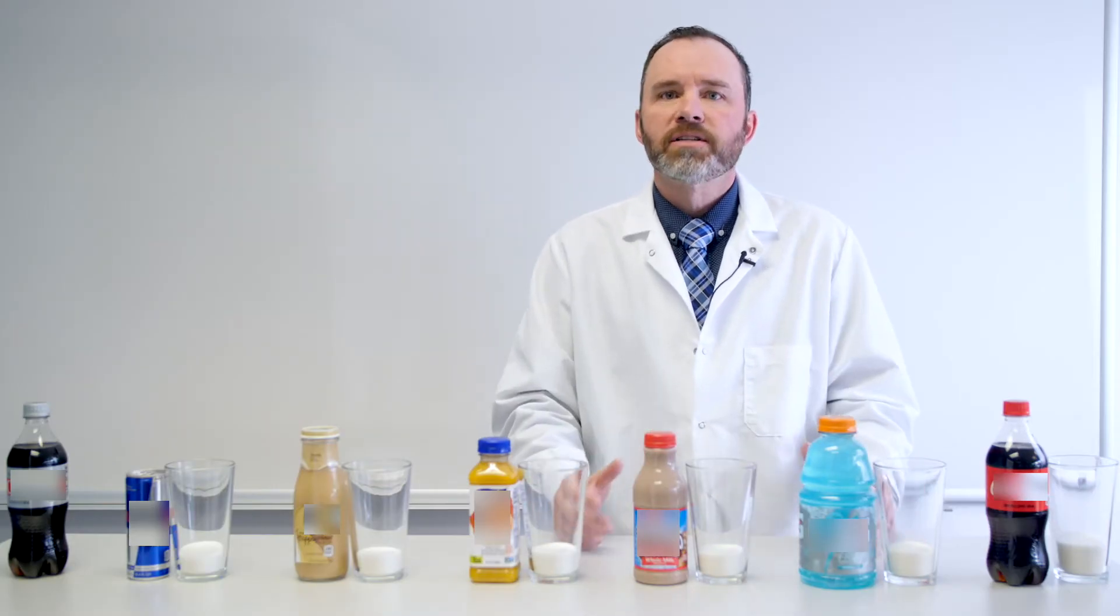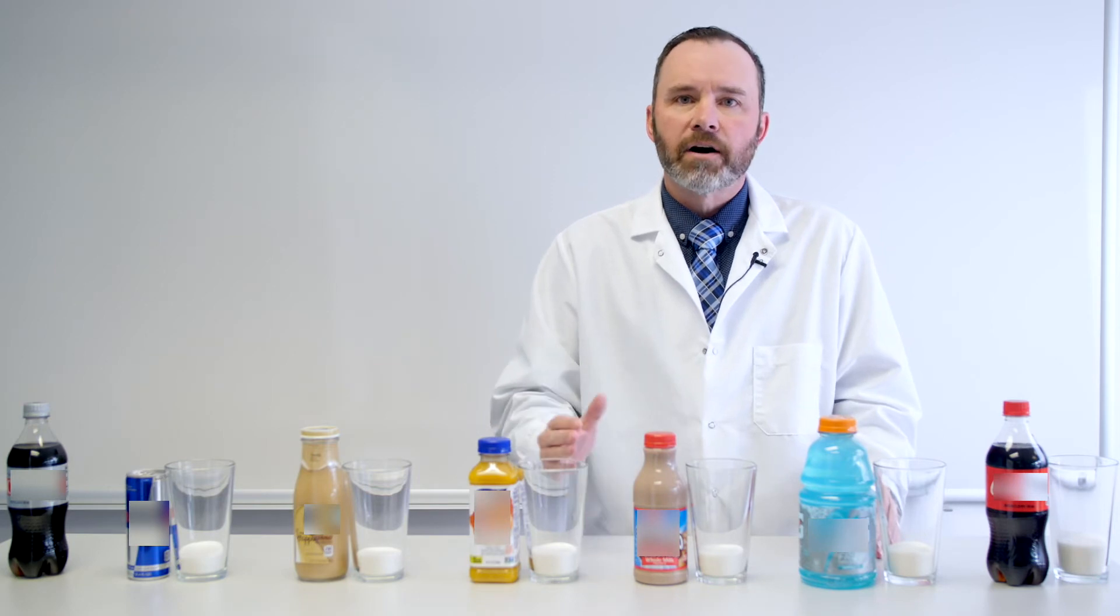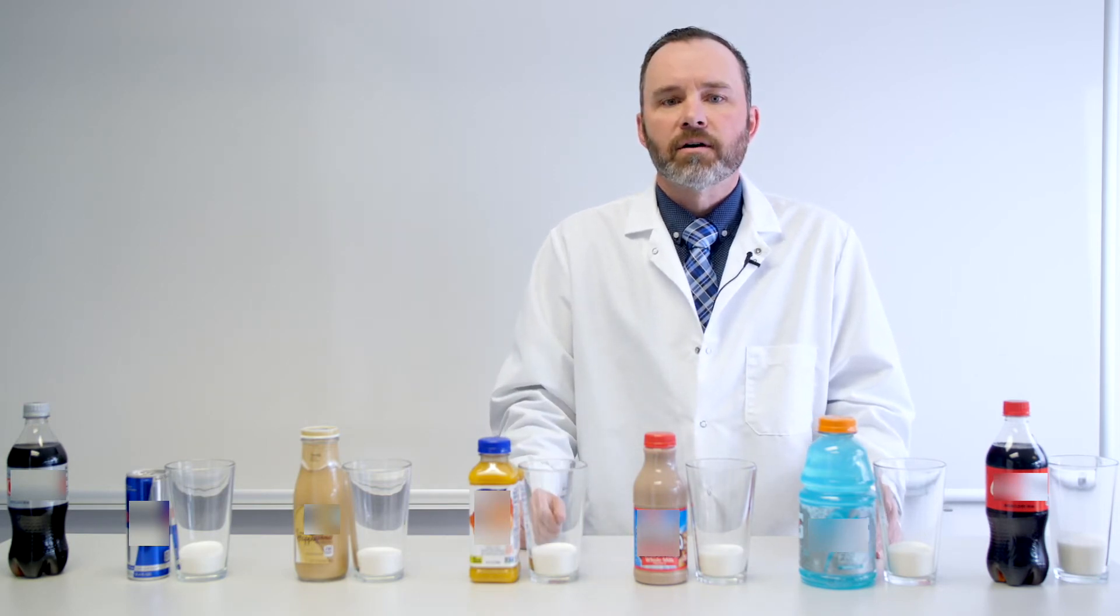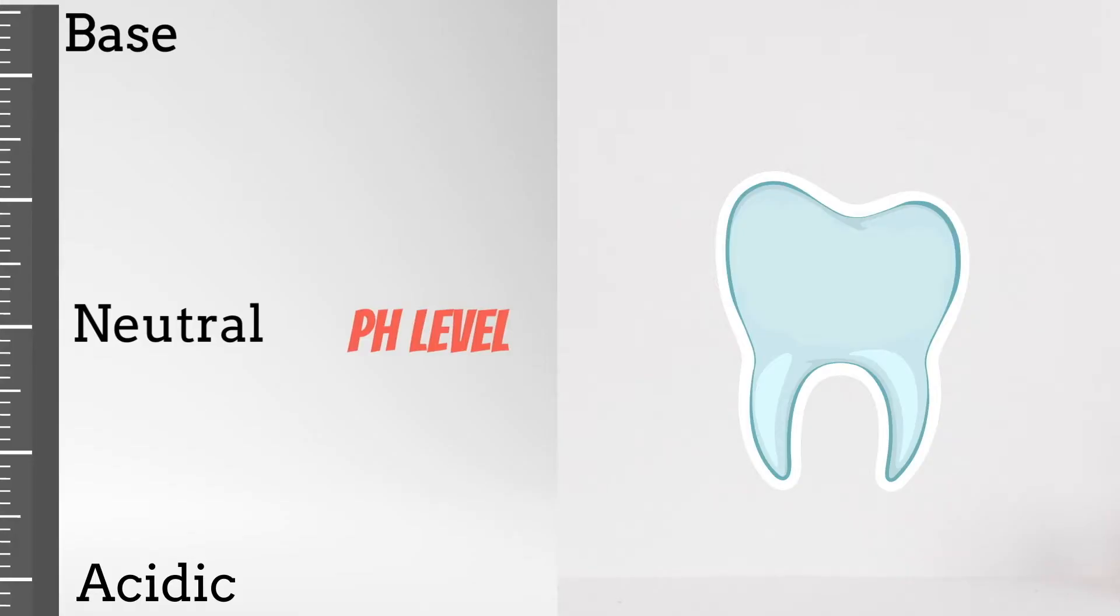How does acid make that cavity? The enamel on your teeth is the hardest substance in your body, right? And the reason it's so hard and resistant to decay and wear is because there are chemicals in your enamel that help to make it hard. The problem is that on a microscopic level, when the pH drops, those hard minerals that are in your enamel, they leach out of the enamel and create a softer enamel more prone to decay.